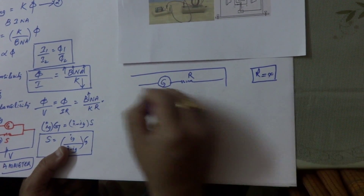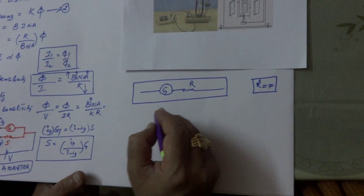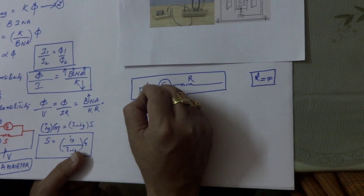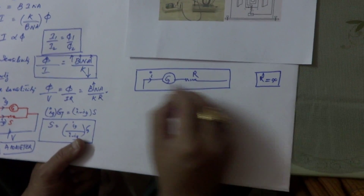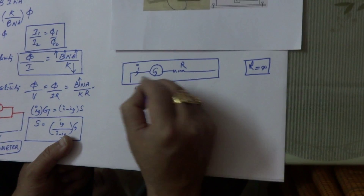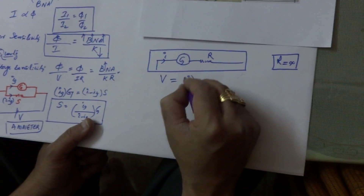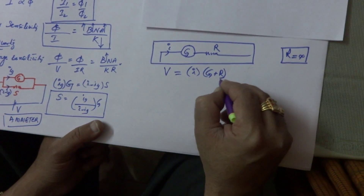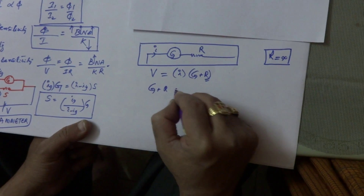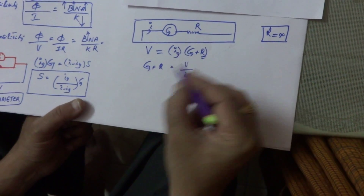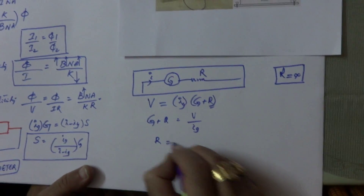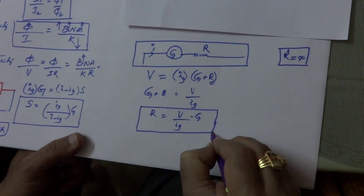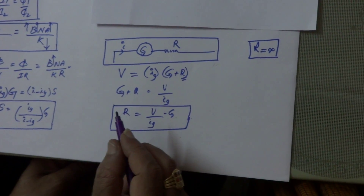This setup is called a voltmeter. The voltmeter is used to measure the potential difference across any two points. The required high resistance to be connected across the galvanometer in series is given by: R equals V by Ig minus G. This is the required resistance to be connected in series across the galvanometer.